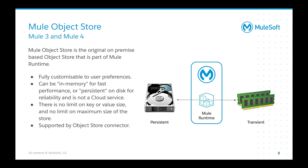The object store in Mule 3 and 4, if you peel it back to the runtime itself, is the original part of the on-premise runtime. The Mule runtime object store is fully customizable — it can either be in memory for fast performance, or it can be persistent where you actually store those key-value pairs to disk. Every time you go to retrieve those key-value pairs, it looks them up within the file store. Otherwise, you can also store into transient.